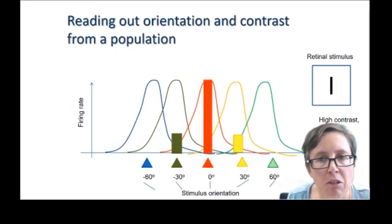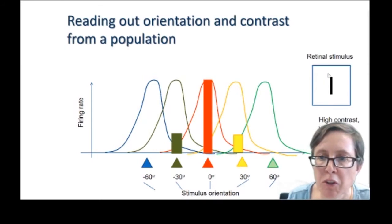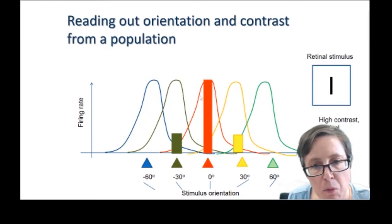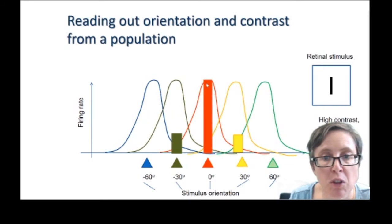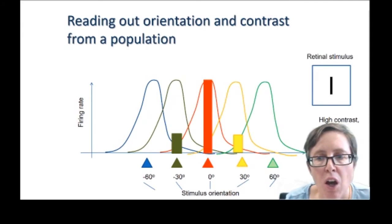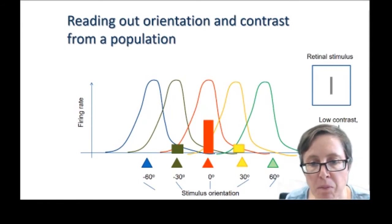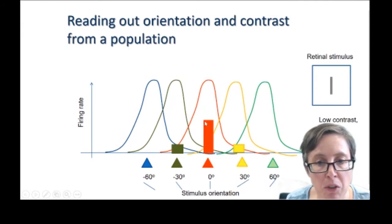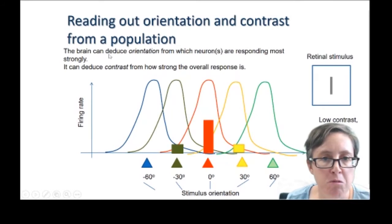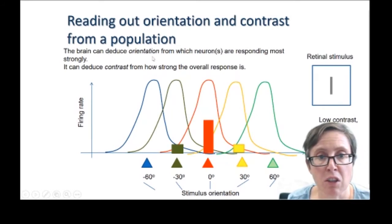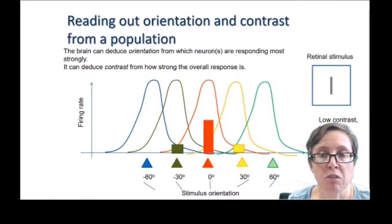So let's see how we can read out orientation and contrast from a population. Imagine we've got a high contrast vertical stimulus like here. The response of this population will be something like this. The cell that's responding most strongly will be the red cell because vertical is its preferred orientation. And then the ones tuned to adjacent orientations will also be responding somewhat. Now suppose we have the same stimulus but it's low contrast. The overall response of all the neurons will reduce because neurons generally respond more to high contrast than to low contrast stimuli. But once again, the neuron that's responding strongest will be the one tuned to vertical orientations.